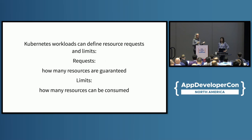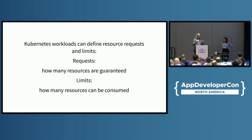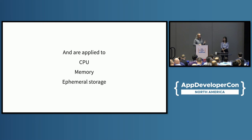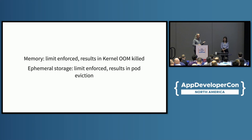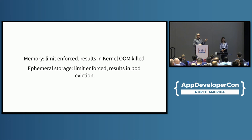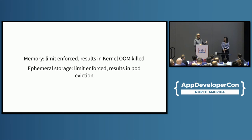On Kubernetes, you can have resource requests and limits. Requests are basically how many resources are guaranteed; limits are how many resources you can consume, and you can over-commit with limits higher than requests. These apply to CPU, memory, and ephemeral storage. On the memory side, the limit is enforced and results in a kernel OOM kill — for Java developers, this is separate from JVM OOM exceptions. If you go over the container memory limit, the kernel kills your process. For ephemeral storage, going over the limit causes your pod to be evicted from the node.